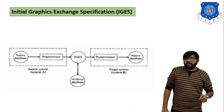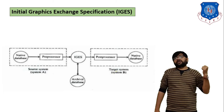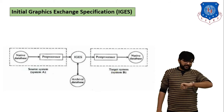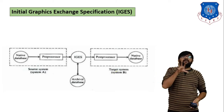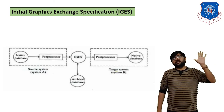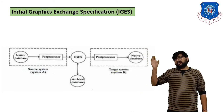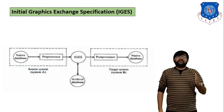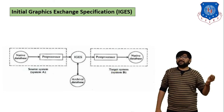In today's session we discussed direct and indirect data exchange translators, what graphic standards are and their function, various graphic standards, and the Initial Graphic Exchange Specification. This is the last lecture of Chapter 1, the introduction portion. In Chapter 1 we discussed various types of graphic display devices like LCD, LED, and CRT, and methods to scan the display such as raster scan and vector scan.